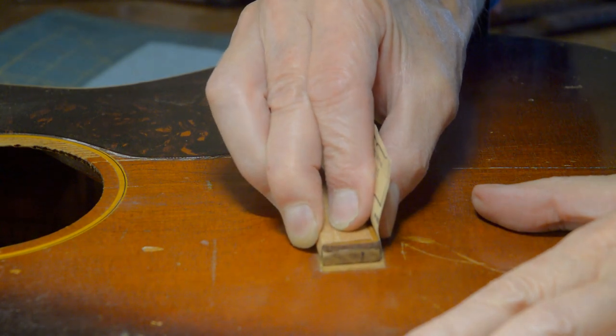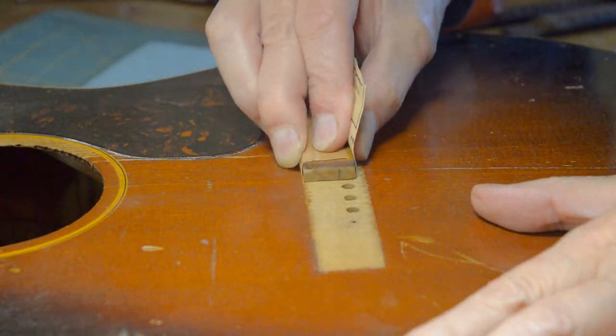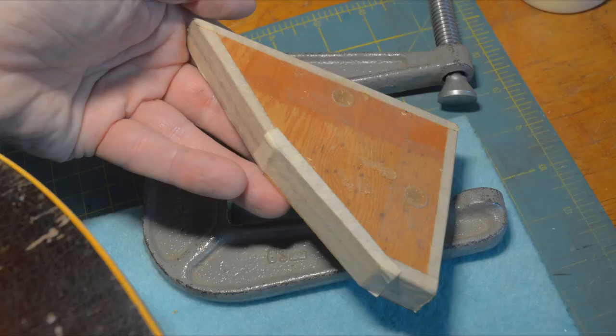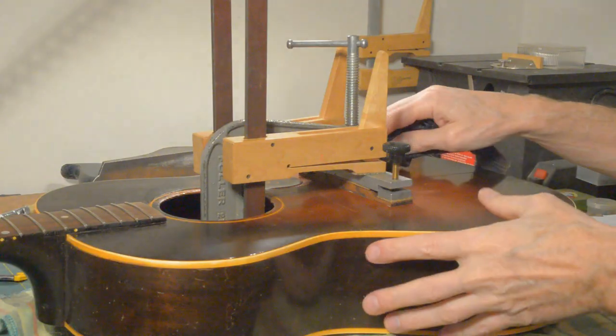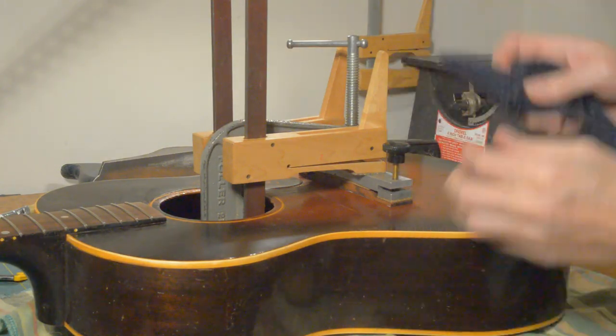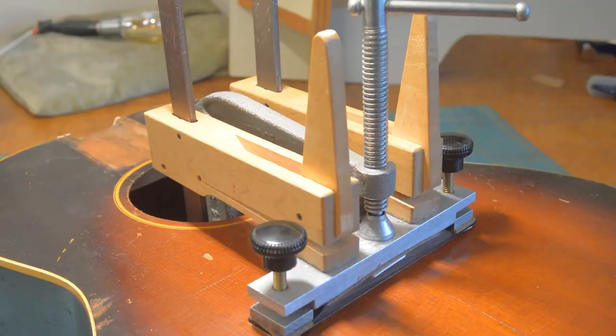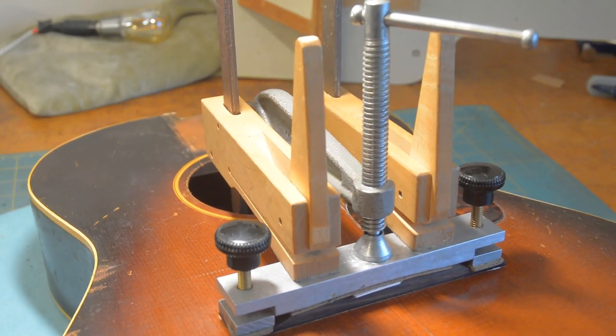Here I'm preparing the bridge site. This is my clamping collar I'll be using. Then it's all clamped in place. And I'm removing some glue squeeze out. There it is.